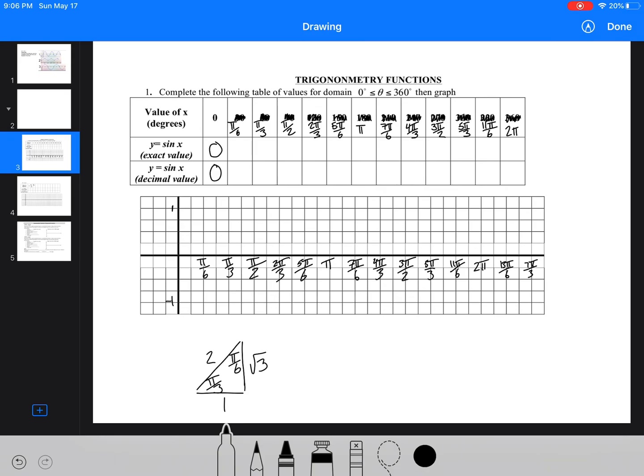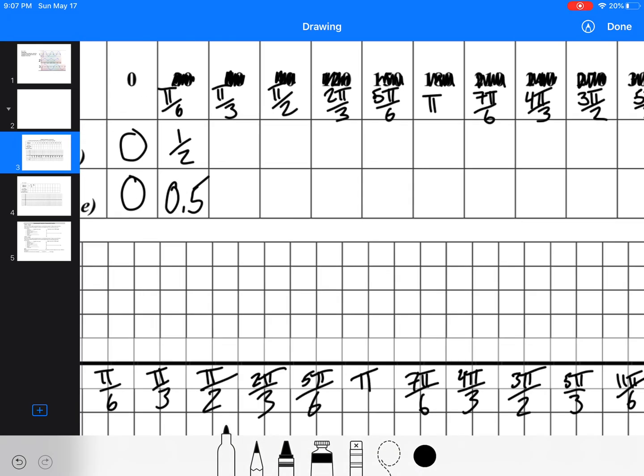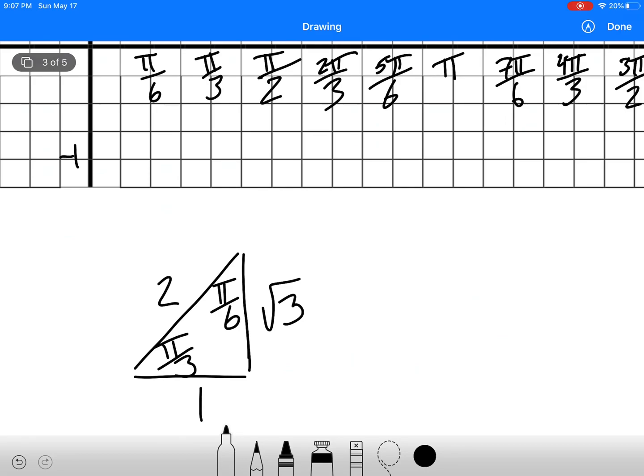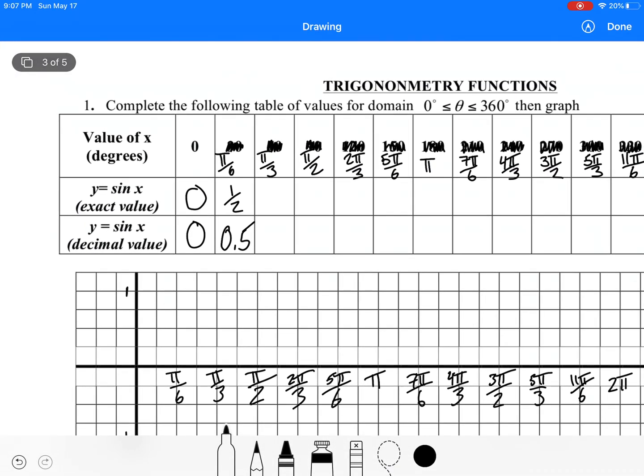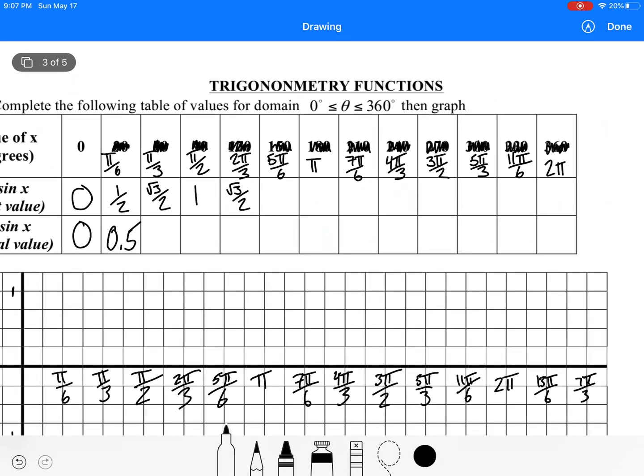So the next one, so sine of pi by 6, 1 over 2, 0.5, I'm going to zoom in here a little bit. And then we've got root 3 over 2, and then 1, then root 3 over 2, because we're in the second quadrant, still have a related acute angle of pi by 6, or sorry, pi by 3, and 1 half, and then 0.